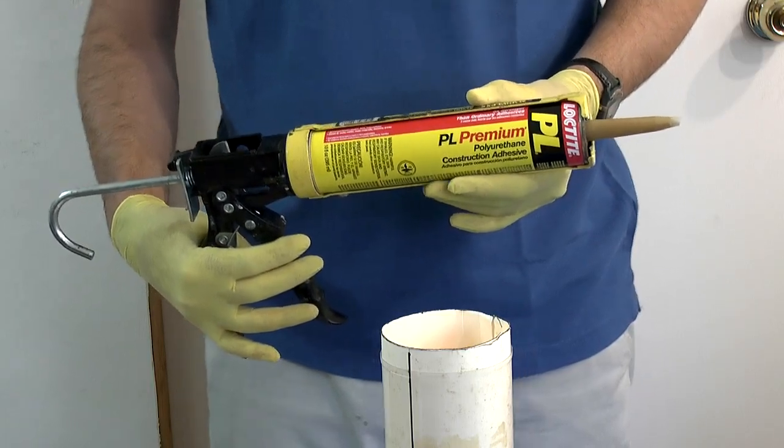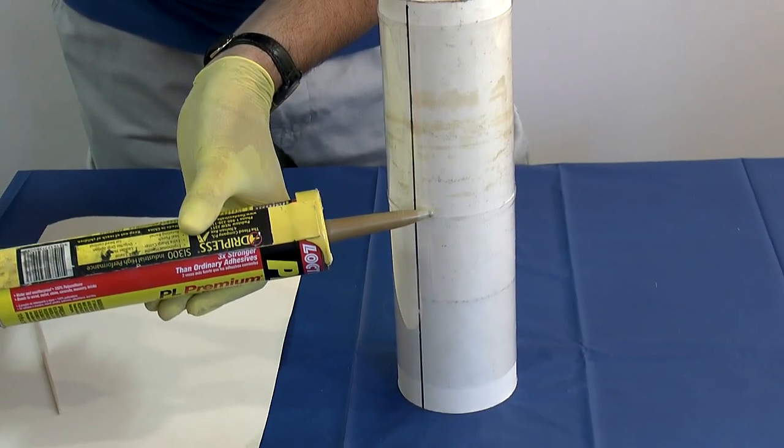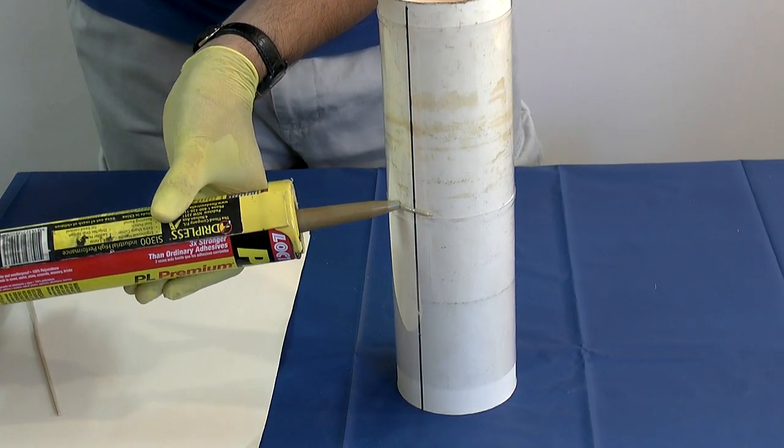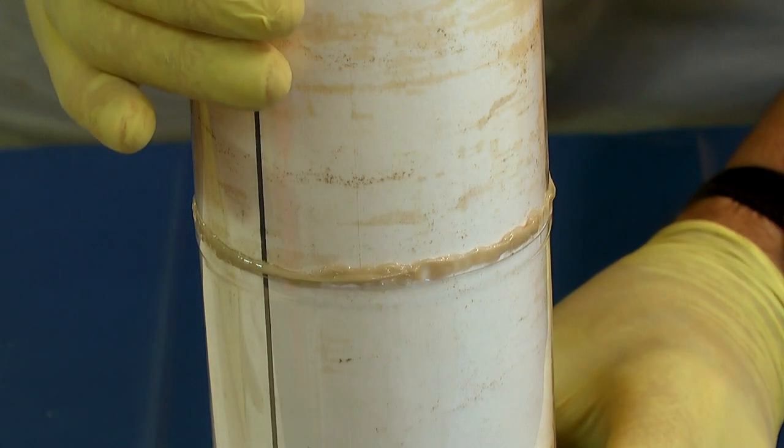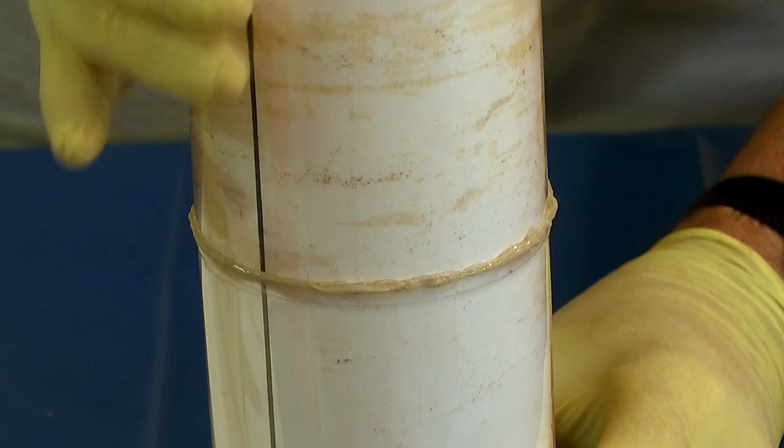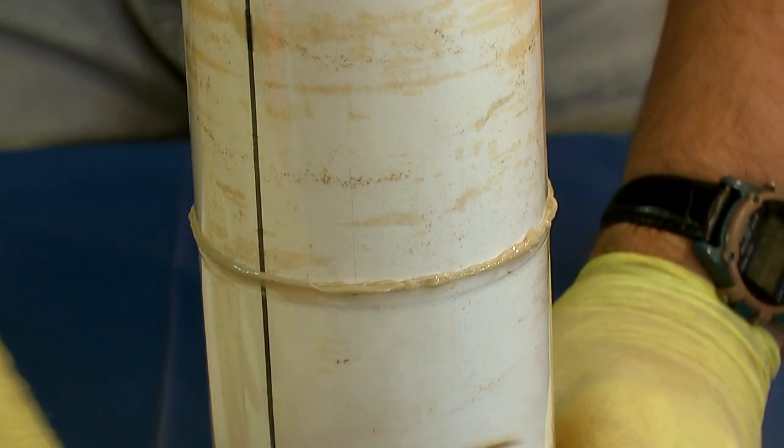Next, get your PL Premium glue and run a fairly thin bead around the top sleeve. When you finish the bead, just simply slide the top sleeve into the bottom one. And you can clean up the edges with a skewer stick.